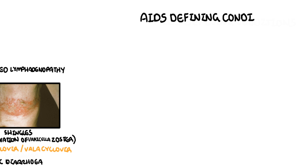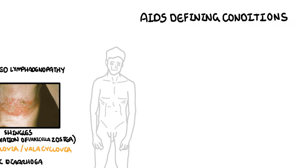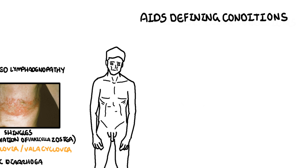AIDS defining conditions typically occur when the CD4 cell count is quite low, usually below 200 cells per microliter in HIV-infected patients. However, there are AIDS defining conditions that can occur with a variable CD4 count — it can even be below 500 cells per microliter, for example.